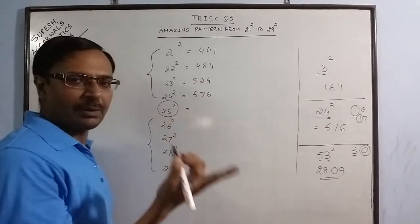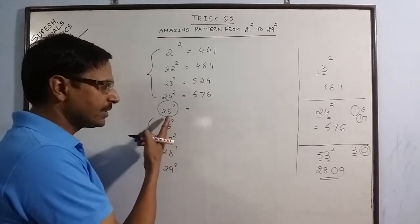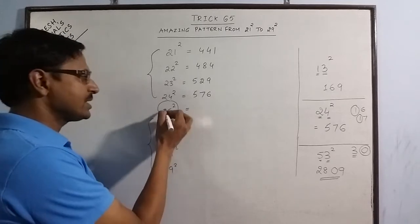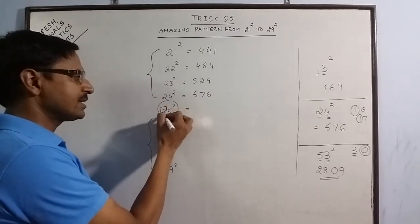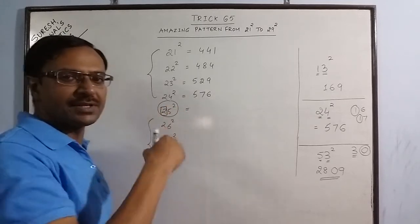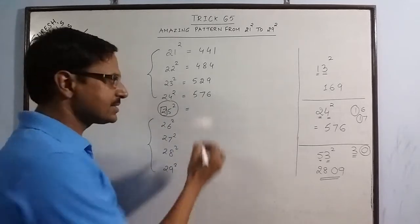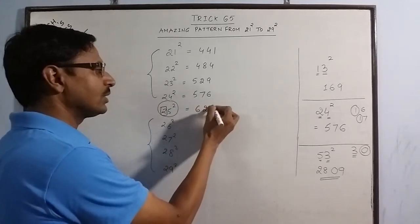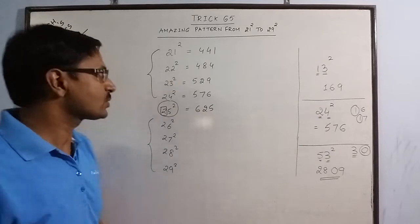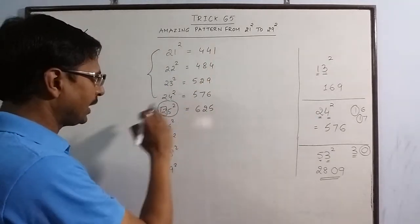For this you have a unique method again. All numbers ending with 5. Just multiply this number 2 with its successor. 2 into 3 is 6 and put 25. That is all. So we have the squares of the top 4 and the middle one.